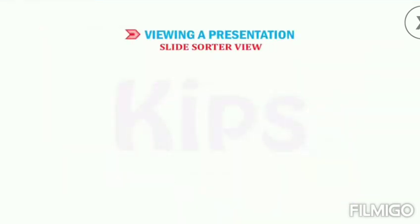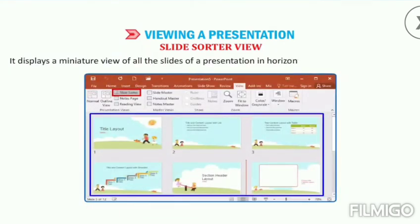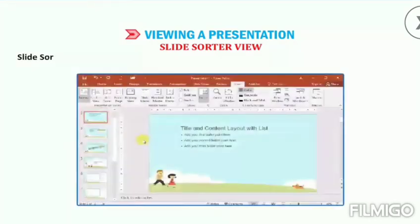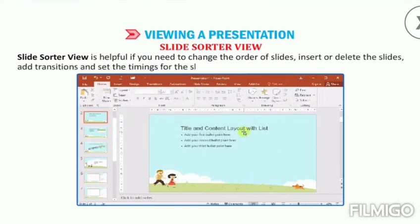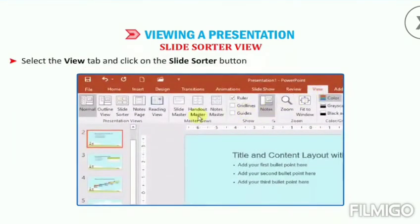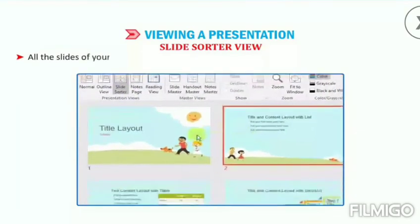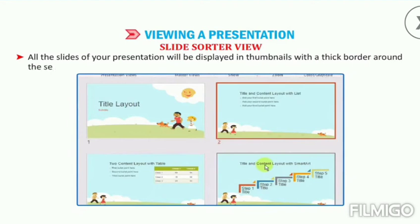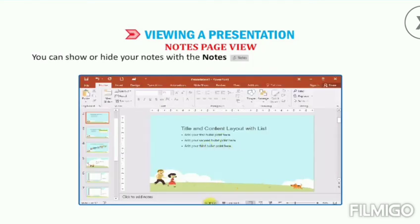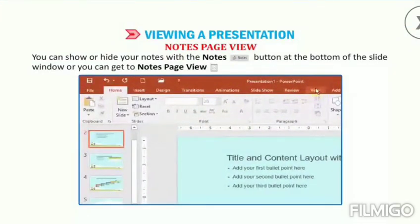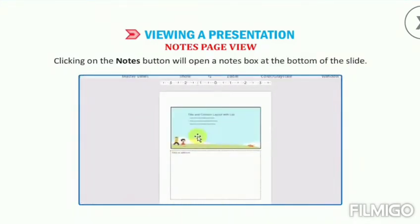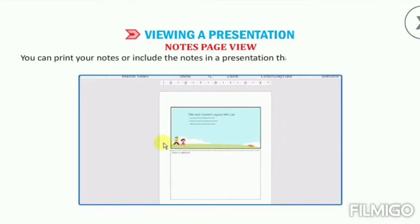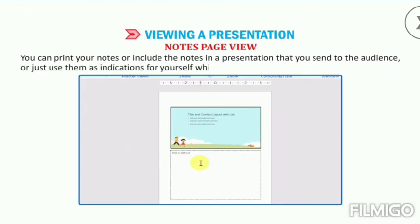Slide Sorter view displays a miniature view of all the slides of a presentation in horizontally sequenced thumbnails. It is helpful if you need to change the order of slides, insert or delete slides, add transitions, and set the timings for the slide show. Select the View tab and click on the Slide Sorter button from the Presentation Views group. All the slides will be displayed in thumbnails with a thick border around the selected slide. In Notes Page view, you can show or hide your notes with the Notes button at the bottom of the slide window, or you can get to Notes Page view from the View tab. You can print your notes or include them in a presentation sent to the audience, or use them as cues for yourself while showing the presentation.